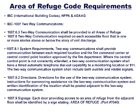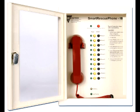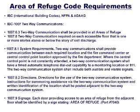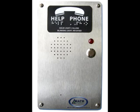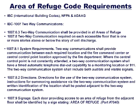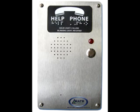Section 1007.8.1, system requirements: Two-way communications shall provide communication between each required location and the fire command center or central control point location approved by the fire department. Where the central control point is not constantly attended, a two-way communication system shall have a timed automatic telephone dial-out capability to a monitoring location or 911. The system shall include both audible and visible signals. Most local authorities having jurisdiction (AHJ) require two-way off-site person-to-person voice communications. Our call boxes will call the base station; if no one answers, they can call up to four different outside phone numbers. A battery backup system is provided for each box in the event of a power outage.